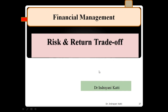Financial decisions are of three types: financing decision, investment decision, and dividend decision. A wealth balance is to be maintained by the financial manager while making all these three decisions.